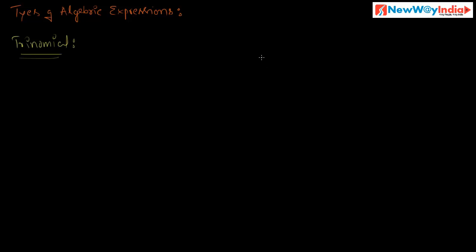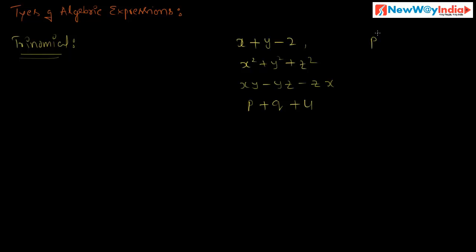Next, trinomial. Consider x plus y minus 2, x squared plus y squared plus z squared, xy minus yz minus zx, x times p plus q plus 4, p squared plus q squared plus r squared, and 2p plus 3q minus 3pq. All these algebraic expressions contain three terms, so they are called trinomials.